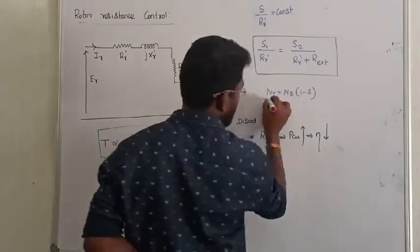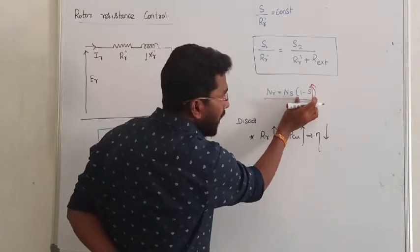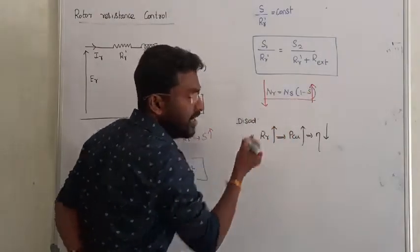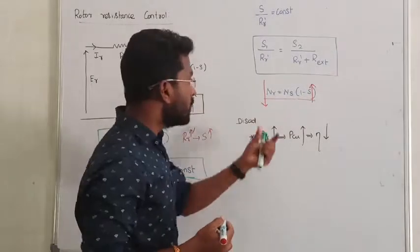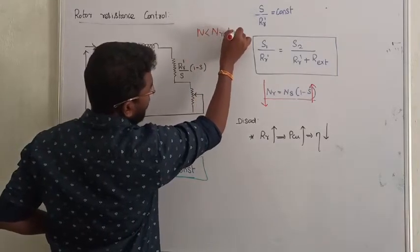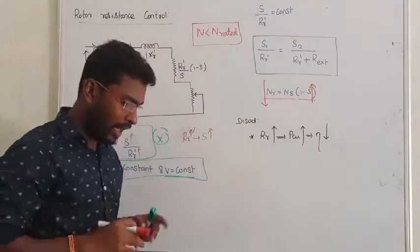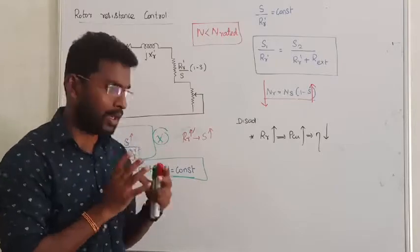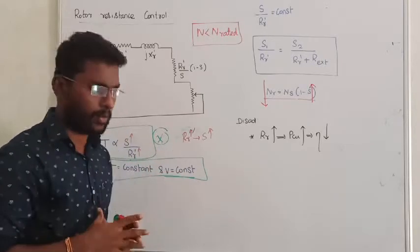What about the speed of the machine? Slip is increasing. Speed equals Ns(1 minus S). Rotor speed will start decreasing. Whenever we are increasing the slip, rotor speed will decrease. So this method is below rated speed, less than rated speed of the induction motor. I would like to control the speed of the induction motor below the rated speed.